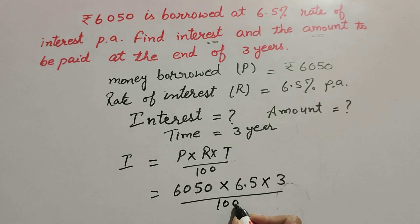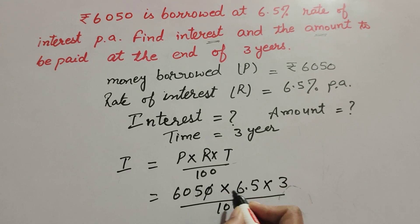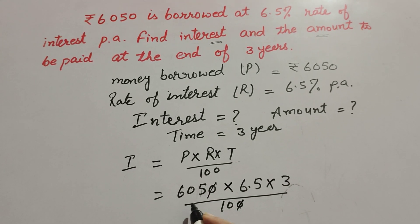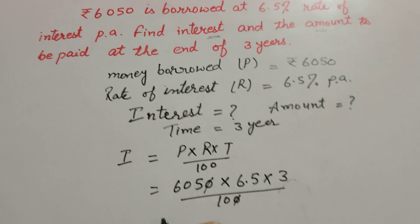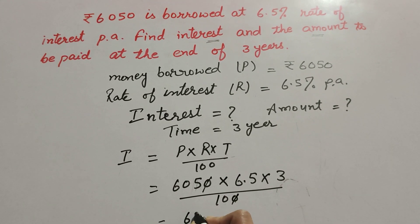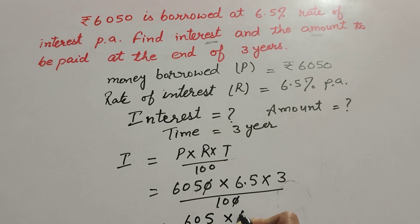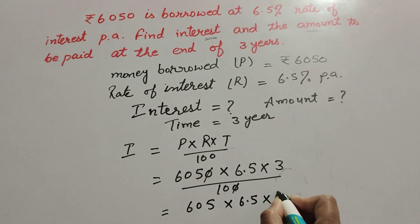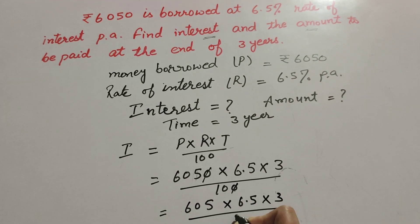So zero in denominator, zero in numerator, both are cancelled. So 605 multiply 6.5 multiply 3 over 10.